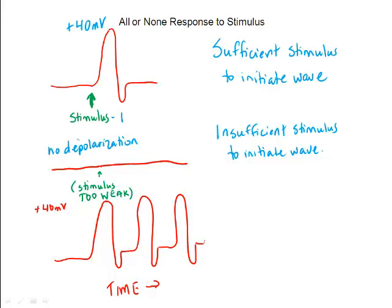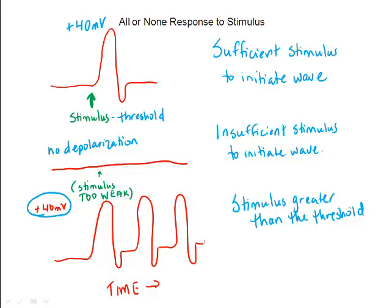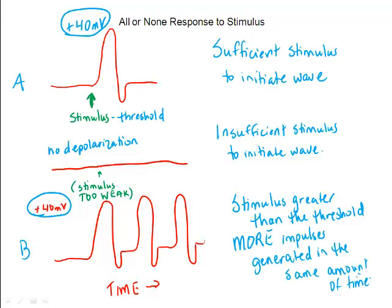The stimulus has to reach a certain threshold, or minimum level, in order for the depolarization to occur. If the stimulus is stronger than the threshold, this does not influence the degree to which depolarization occurs — what it does change is the number of impulses generated in the same period of time. Looking at A and B, which one was the result of a greater stimulus? If you said B, you're correct. The stimulus was greater and might translate into a much sharper pinprick to your finger, as opposed to A, which might have been a very light pinprick.